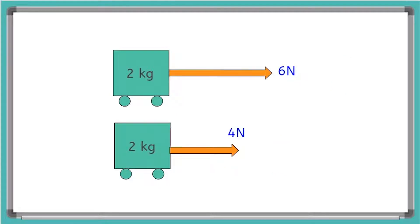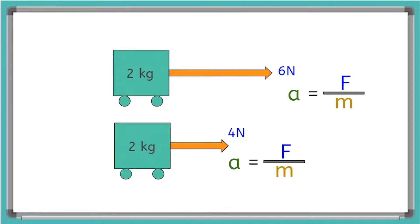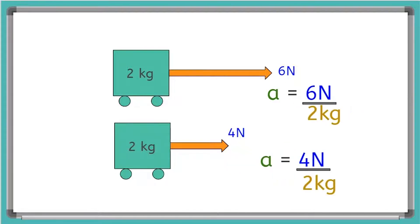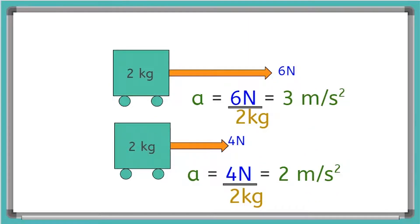Let's say we have two carts and they each have a mass of two kilograms. I'm going to pull the top cart with a force of six newtons and the bottom cart with a force of four newtons. Plugging into A equals F over M: the top cart gets acceleration equals six newtons divided by two kilograms, and the bottom cart gets acceleration equals four newtons divided by two kilograms. The top cart will have an acceleration of three meters per second squared and the bottom cart two meters per second squared. So when two objects have the same mass, the object with the larger force will have a faster acceleration.